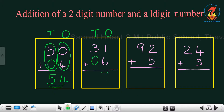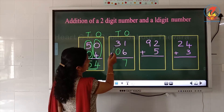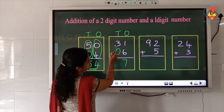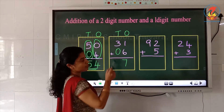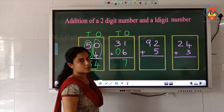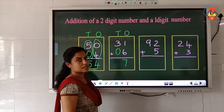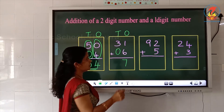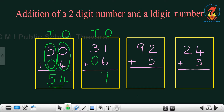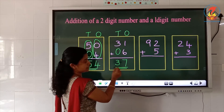So we write 7 in the ones place. Now which are the numbers in the tens place? 3 and 0. What is 3 plus 0? Adding with 0, the answer is the same number. So 3 plus 0 is 3. The answer is 37.